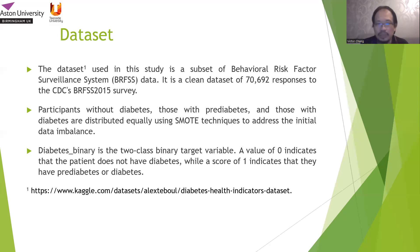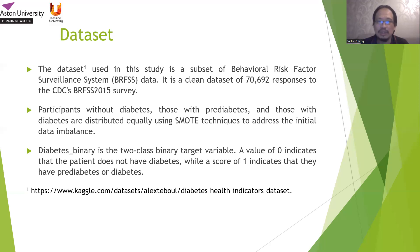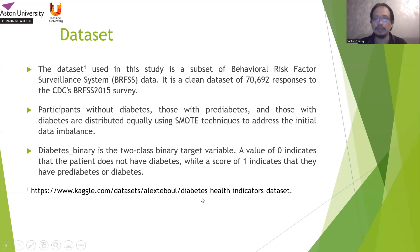Diabetes binary is a two-class binary target variable. A value of zero indicates that the patient does not have diabetes, while a score of one indicates that they have pre-diabetes or diabetes. Pre-diabetes is a condition where you are about to get diabetes, so it's very important that you do certain treatments or medication to avoid getting there, because once you are in pre-diabetes, it is very difficult to return to normal status. We also put a link to the dataset, so if you are interested, please go and download it.